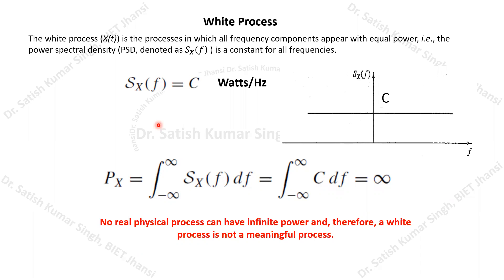Welcome to the course module on communication system engineering. In this video, we are going to discuss the white noise process. First, let's look at the definition of the white process: it is a process in which all frequency components appear with equal power — that is, the power spectral density, normally denoted by S_X(f), is a constant for all frequencies.